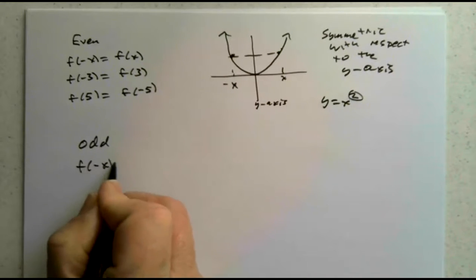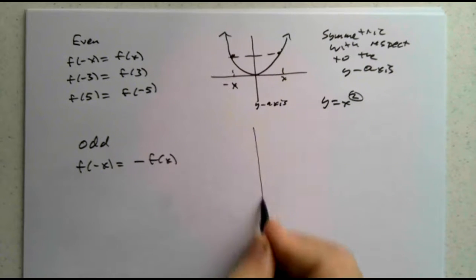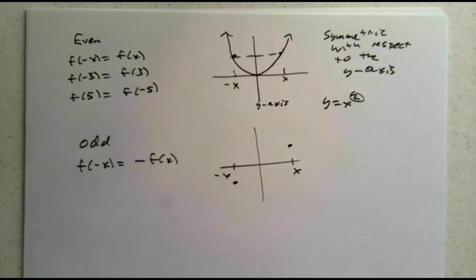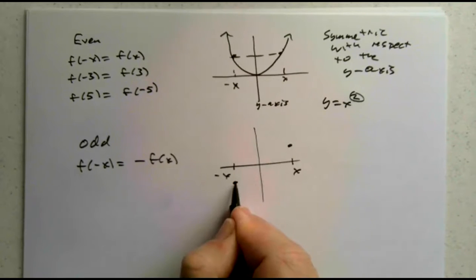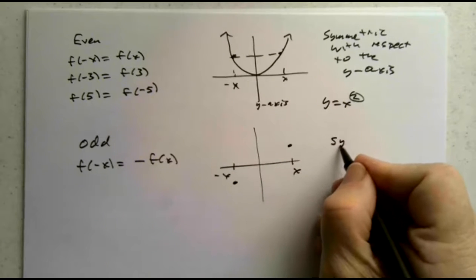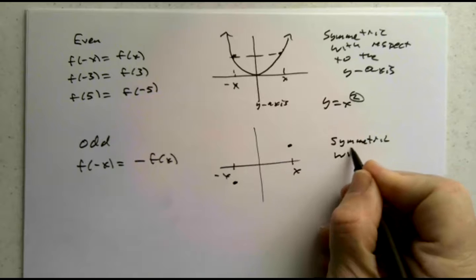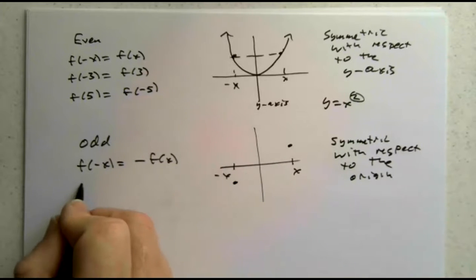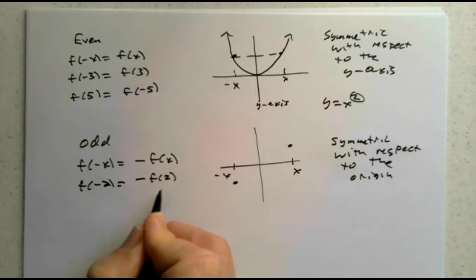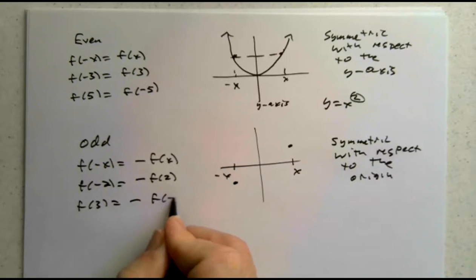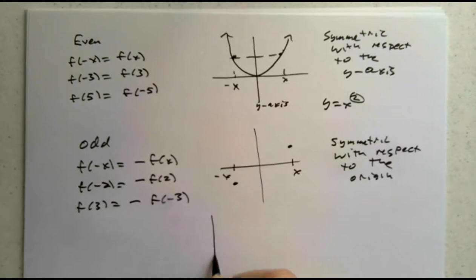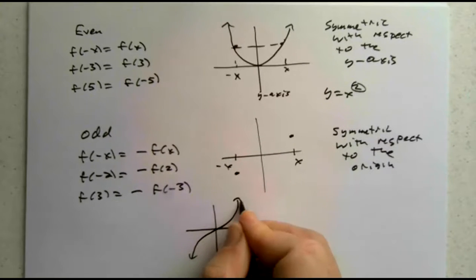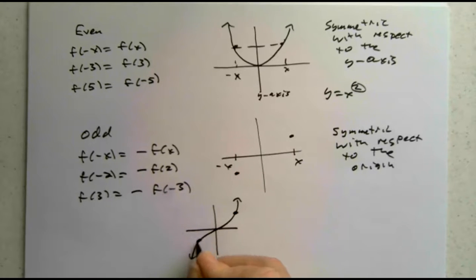An odd function is where f of negative x equals negative f of x. So if this is a point at x, then at negative x it's got to be down there. The concept I use is you flip it twice — flip here once, flip here again, and then it matches up. This is called being symmetric with respect to the origin. For example, f of negative 2 is not the same as f of 2 — it is the opposite of f of 2. f of 3 is the opposite of f of negative 3.